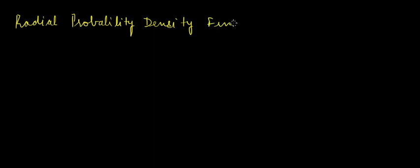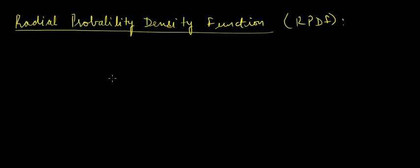Hi guys, in this lecture we will be seeing RPDF, which is the radial probability density function. So RPDF equals 4πr²R²(r), where R² is the radial part of the wave function squared.